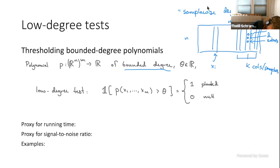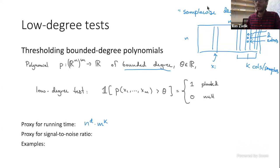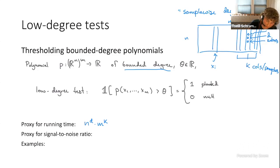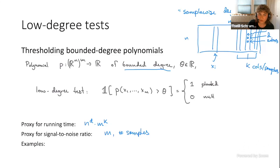Our proxy for running time is the time to evaluate such polynomials, which is something like n^d times m^k. Our proxy for signal-to-noise ratio is again the number of samples. Examples of low-degree tests: spectral algorithms are often low-degree. For instance, the algorithm that takes the adjacency matrix of a graph and evaluates its top eigenvalue — you take the trace of the L-th power of the adjacency matrix, which is approximately the maximum eigenvalue to the L, then apply a threshold. This has sample-wise degree (L, 1).